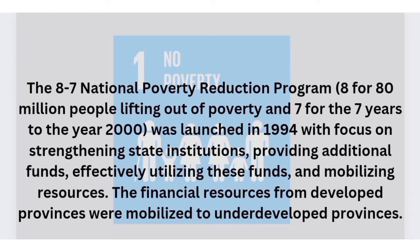In 1994, China launched another new program called the 8-7 National Poverty Reduction Program. Under this program, the plan was to strengthen state institutions, provide additional funds wherever needed, and ensure their effective allocation and utilization. The major work done was to mobilize financial resources from already-developed provinces and divert them toward underdeveloped provinces. The goal was to lift 80 million people out of poverty within 7 years.